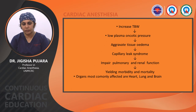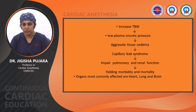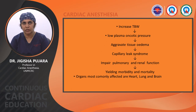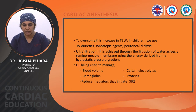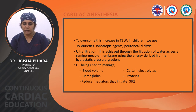Increase in total body volume causes low plasma oncotic pressure, aggravates tissue edema, capillary leak syndrome, impaired pulmonary and renal function, and ultimately yields morbidity and mortality. Organs mainly affected are heart, lung, and brain. To overcome this increase in total body water, in children we use IV diuretics, inotropic agents, peritoneal dialysis, etc.